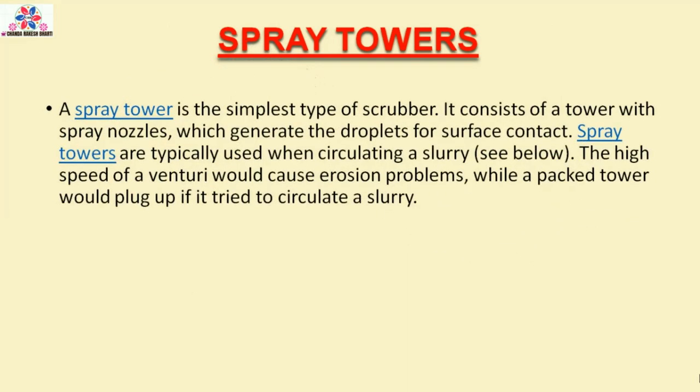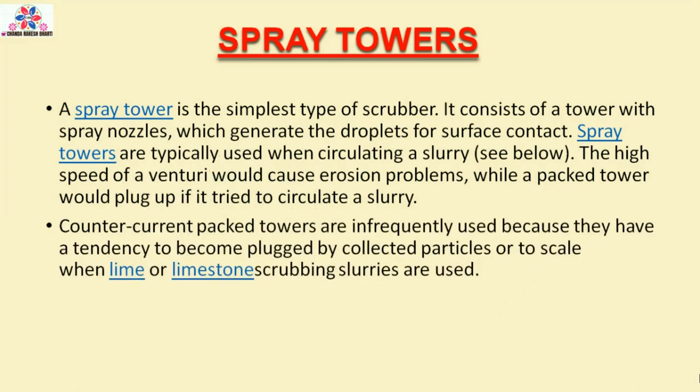Spray Towers: A spray tower is the simplest type of scrubber. It consists of a tower with spray nozzles, which generate the droplets for surface contact. Spray towers are typically used when circulating a slurry. The high speed of a Venturi would cause erosion problems, while a packed tower would plug up if it tried to circulate a slurry. Countercurrent packed towers are infrequently used because they have a tendency to become plugged by collected particles or to scale when lime or limestone scrubbing slurries are used.